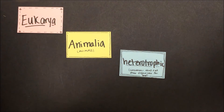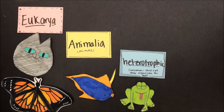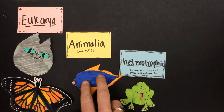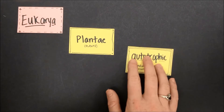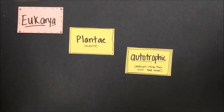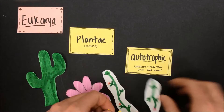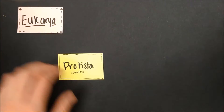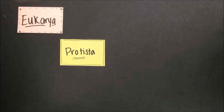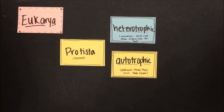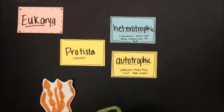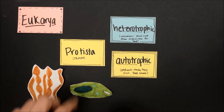Animals are also heterotrophic — they cannot make their own food and have to consume other organisms for energy. Plants are autotrophs; they can produce their own food using the process called photosynthesis. Last but certainly not least are the protists. Some protists are heterotrophs and some are autotrophs; some are similar to fungi, some to animals, and some to plants. It's a very diverse category of life, but all of them live in or near water.